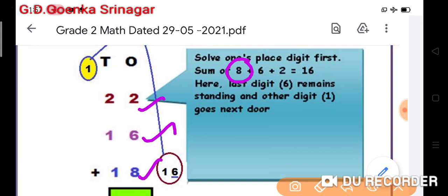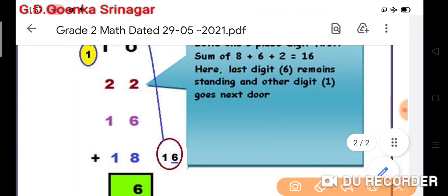Then I will count 6 on my fingers. So 8 plus 6 is 8, 9, 10, 11, 12, 13, 14. Then I will add 2 to 14 and that is equal to 14, 15, and 16. Here the last digit 6 remains standing and the other digit 1 goes to the next door. So I wrote 6 here and 1 is on tens place.